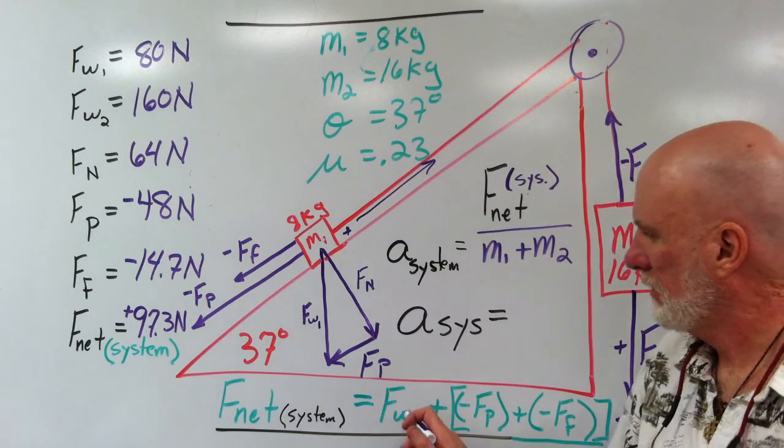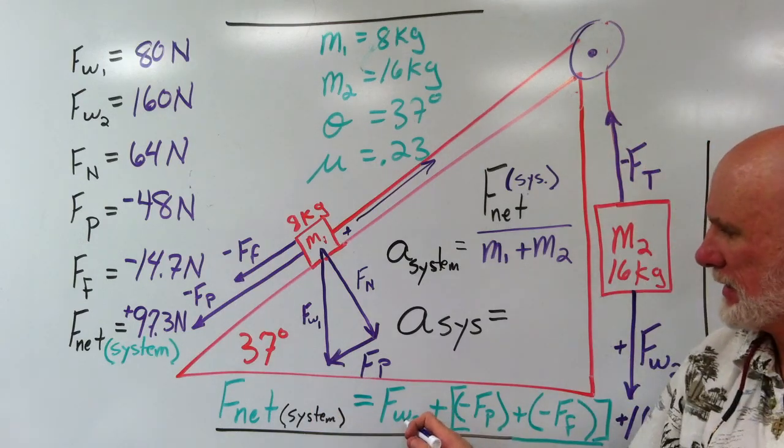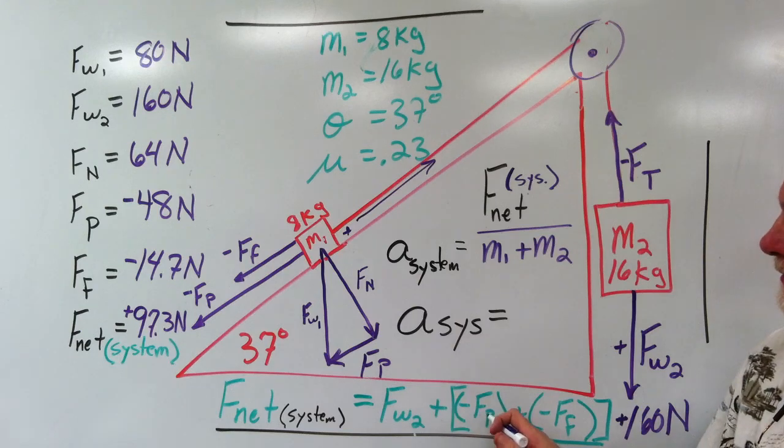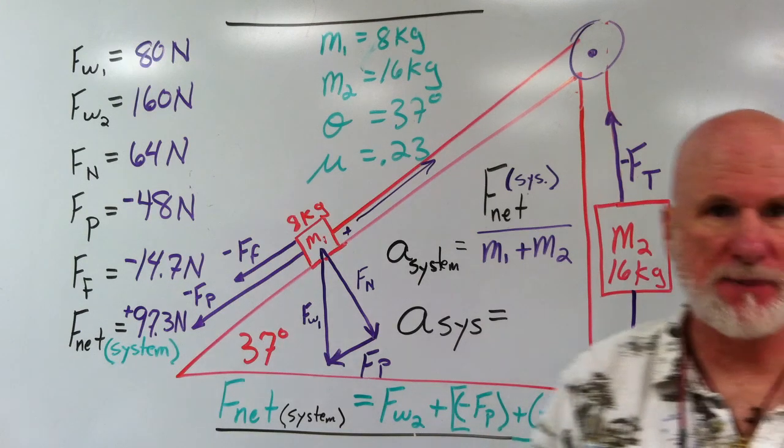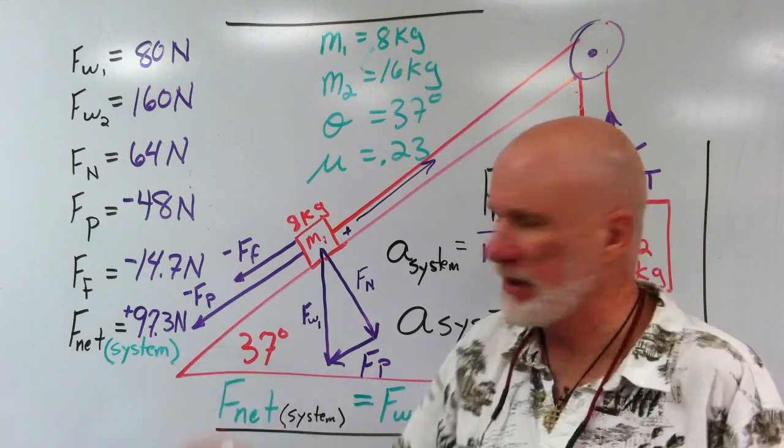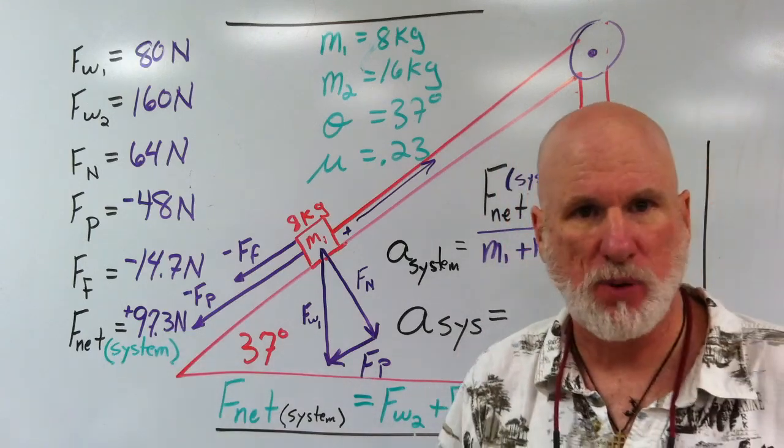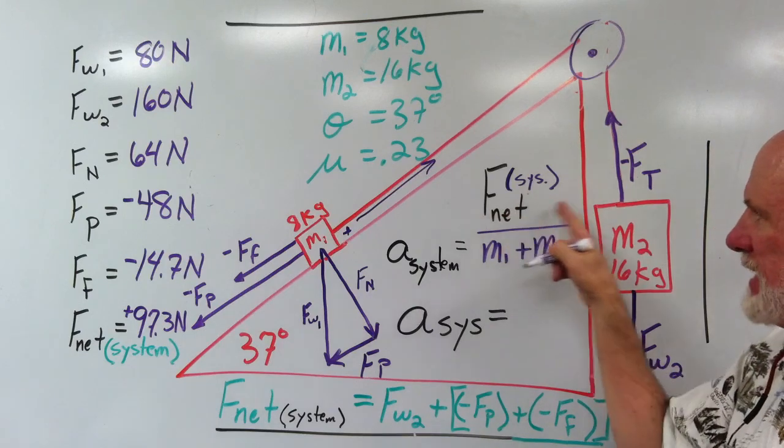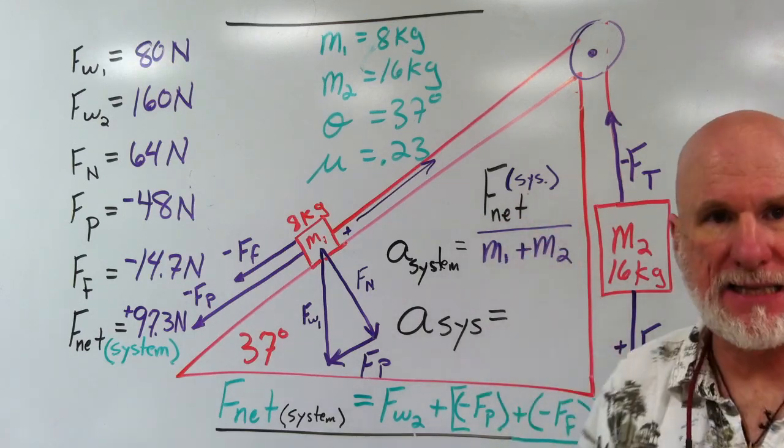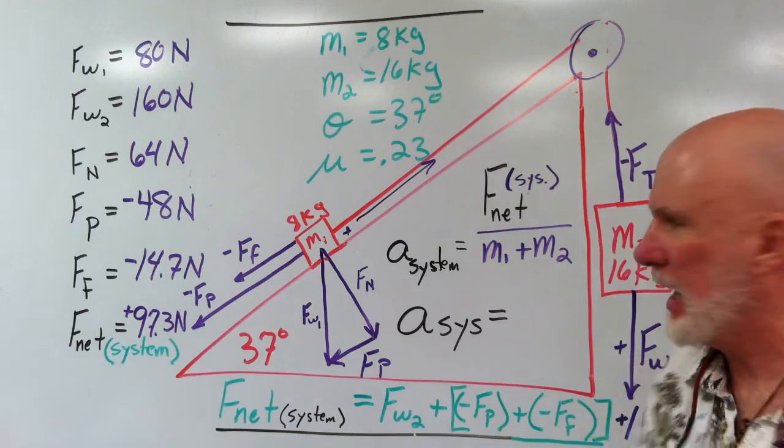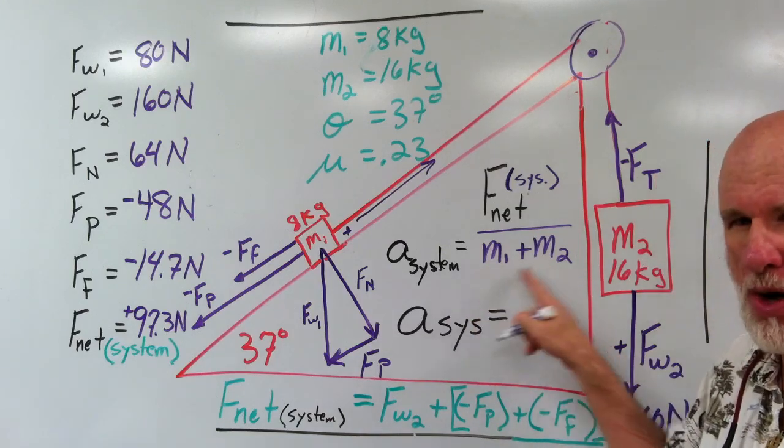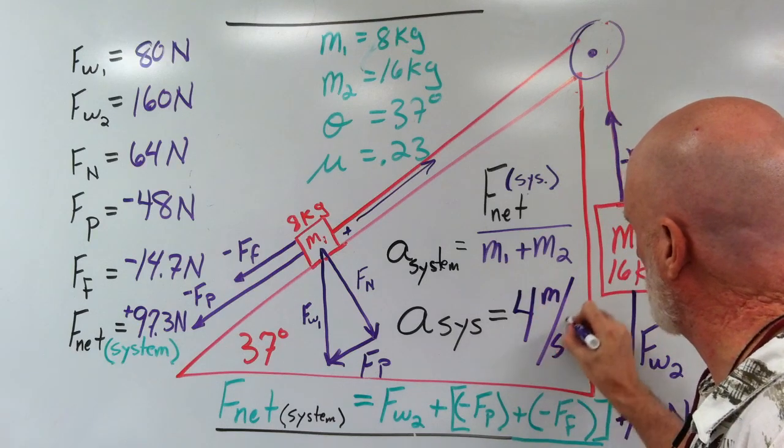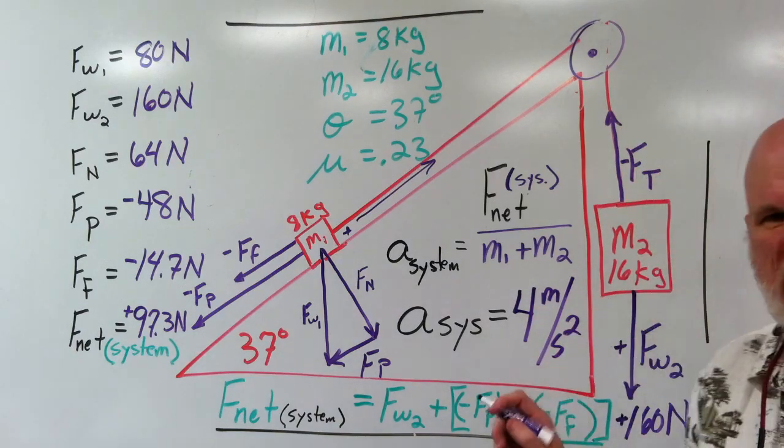So then this value, if you plugged in 160 plus negative 48 plus negative 14.7, you get positive 97.3. So that would be the Fnet of the system would be plus 97.3 divided by 24, and that'll be 4 meters per second squared. Okay? Plus.